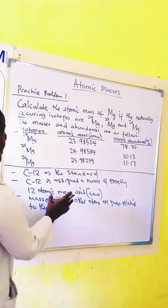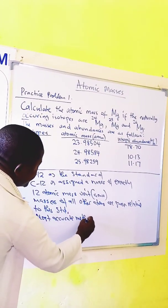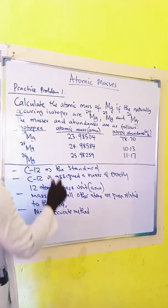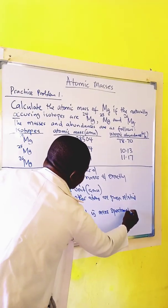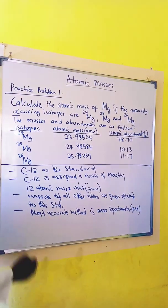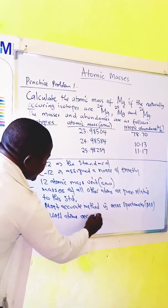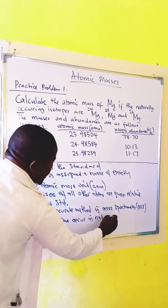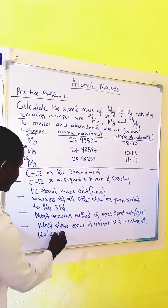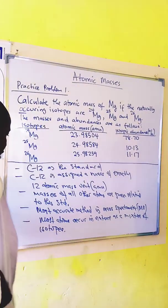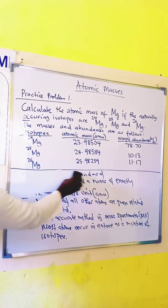The most accurate method used for comparing atomic masses is mass spectrometer (MS). Most atoms occur in nature as a mixture of isotopes. Therefore, the atomic masses are given as average values.